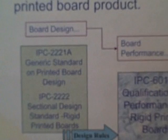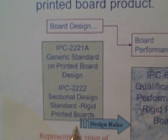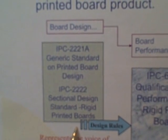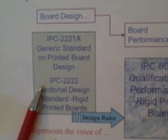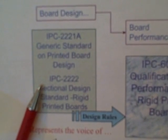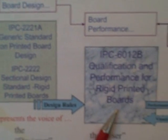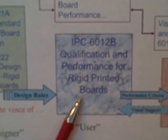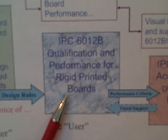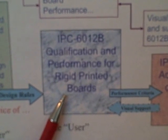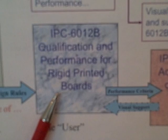Just to give a little background — where we're really starting is at the design level. IPC has two primary printed board design standards: IPC 2221A plus IPC 2222 for rigid printed boards. This then carries on to IPC 6012B, which basically takes the corresponding design rules established in 2221 and 2222 and provides the actual manufacturing minimums once the printed board has been fabricated.